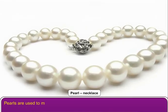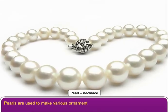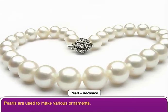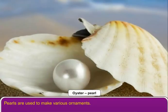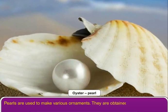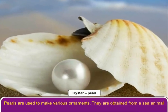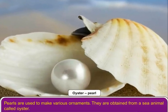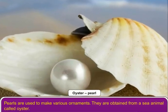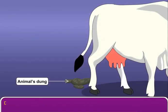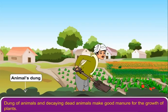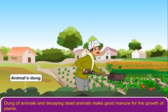Pearls are used to make various ornaments. They are obtained from a sea animal called oyster. Dung of animals and decaying dead animals make good manure for the growth of plants.